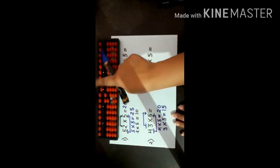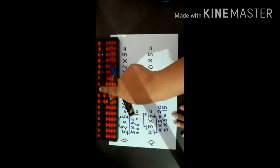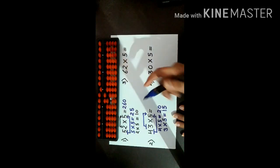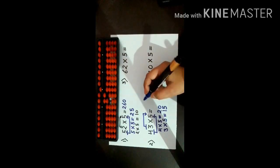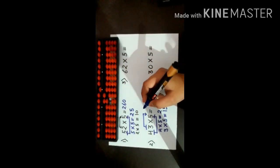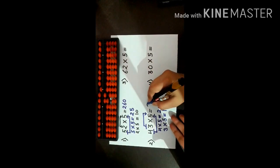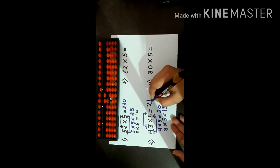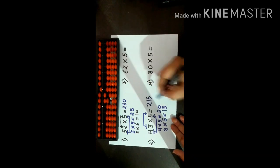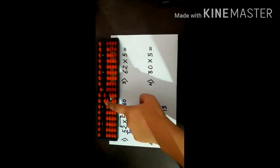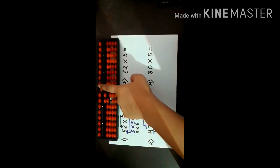So I have placed 1 and 5. What is the answer? 100, 200, then 10 and 5 — so the answer is 2, 1, 5. You can write this as 215.